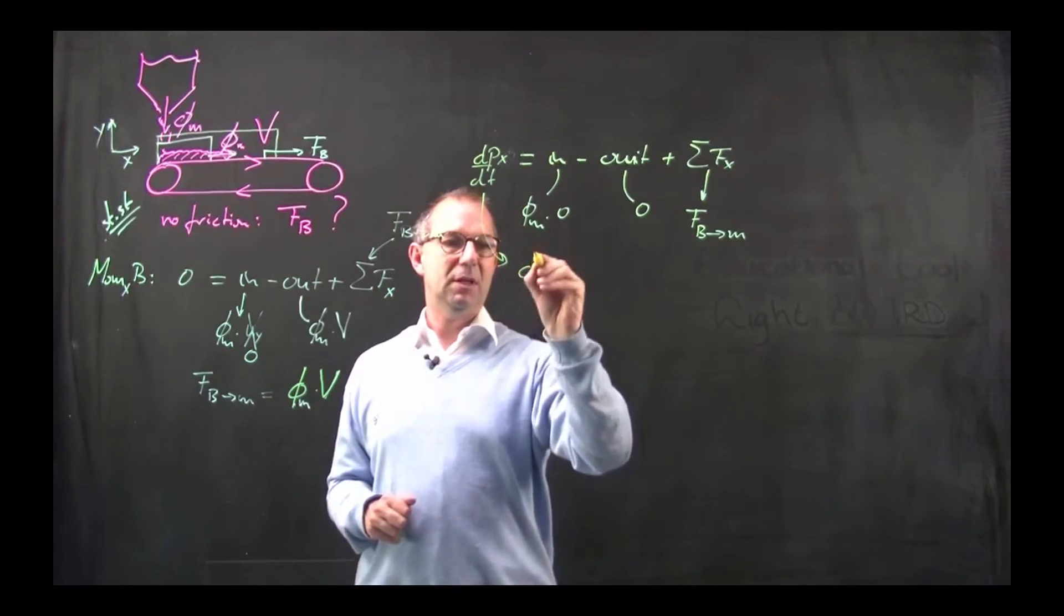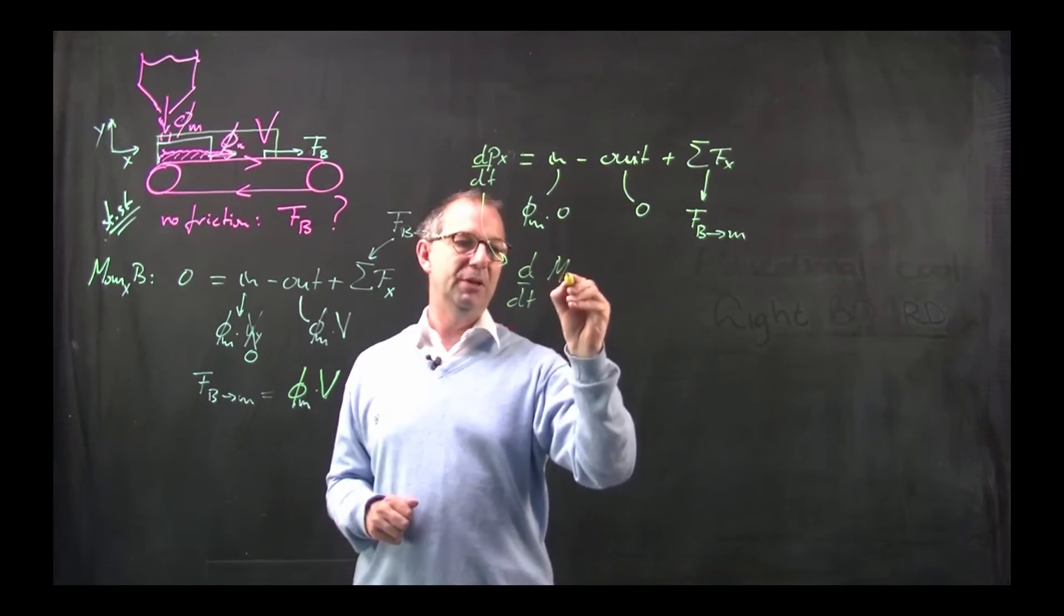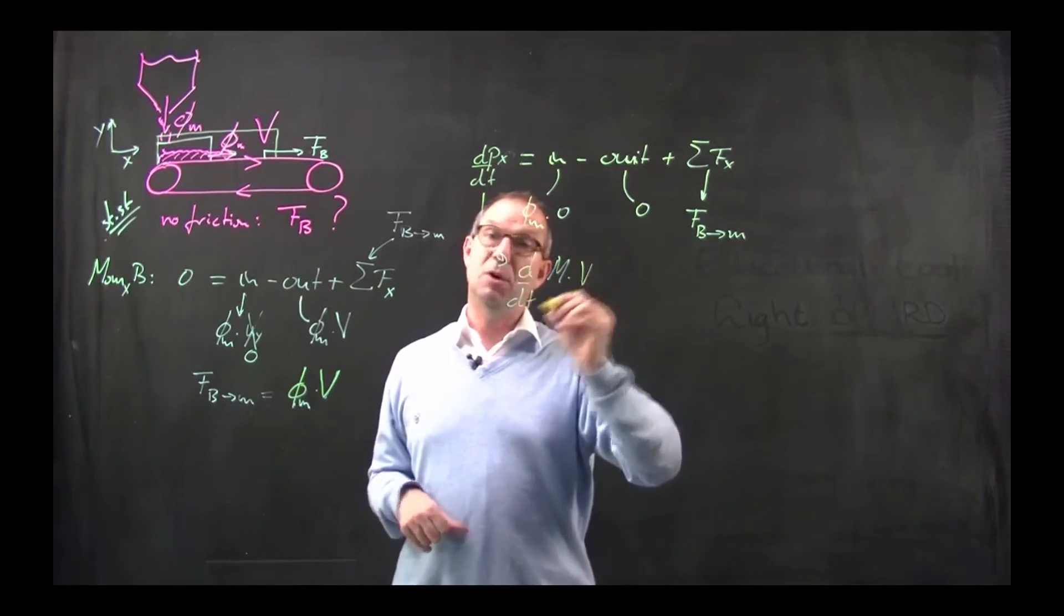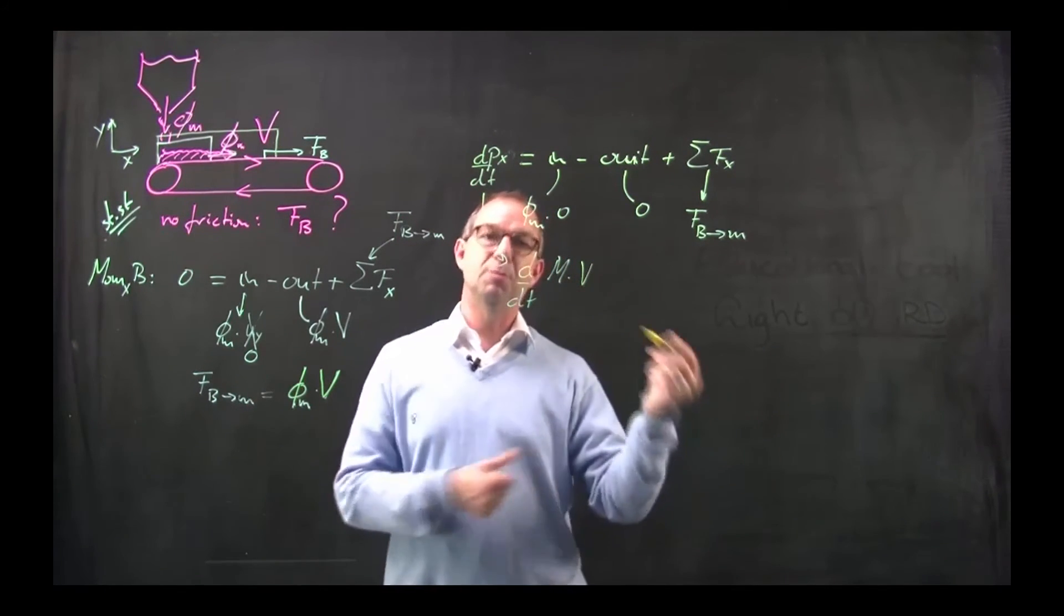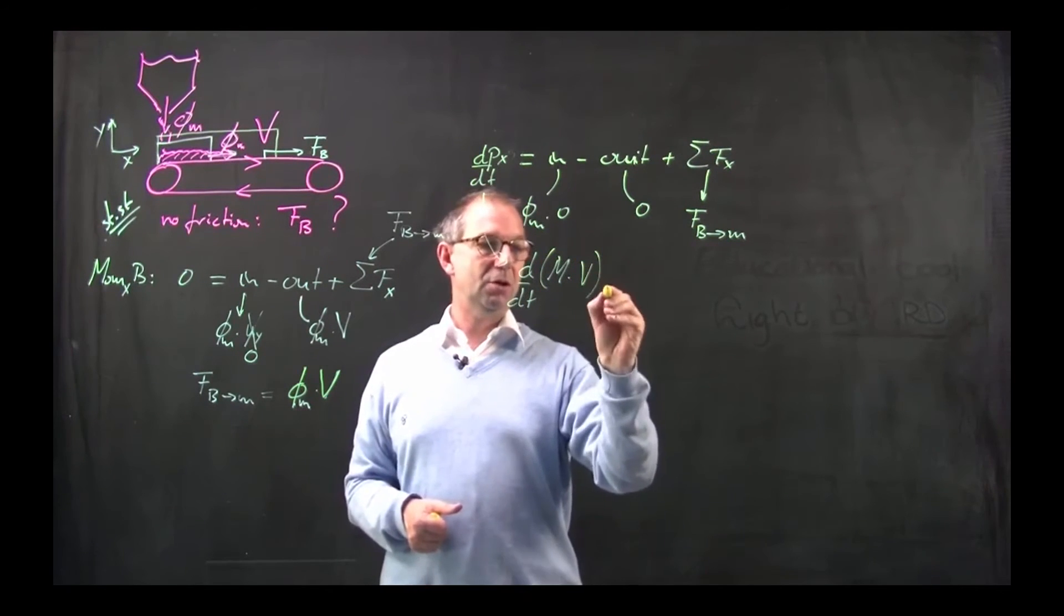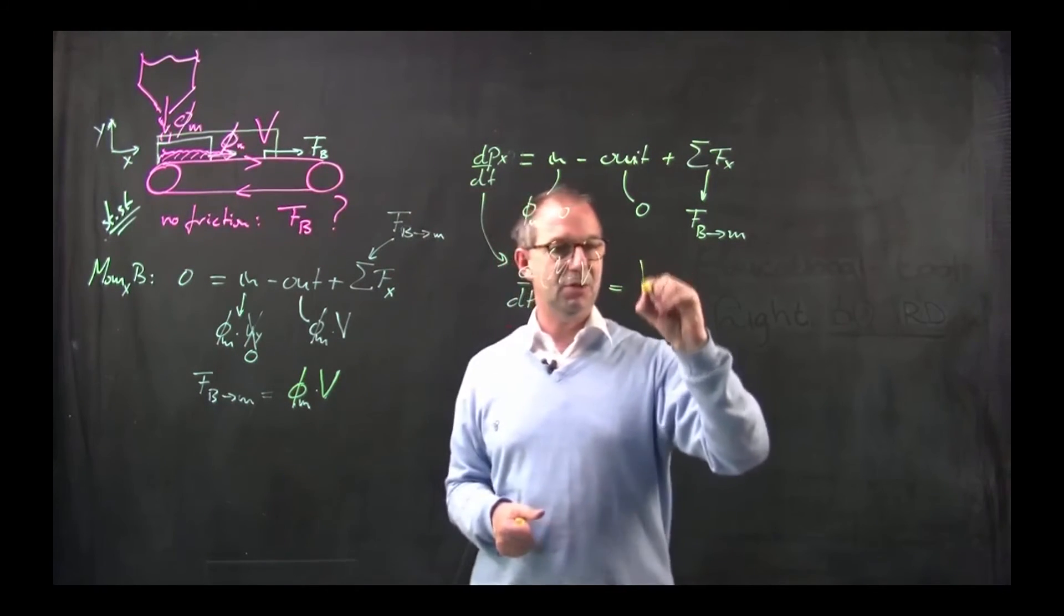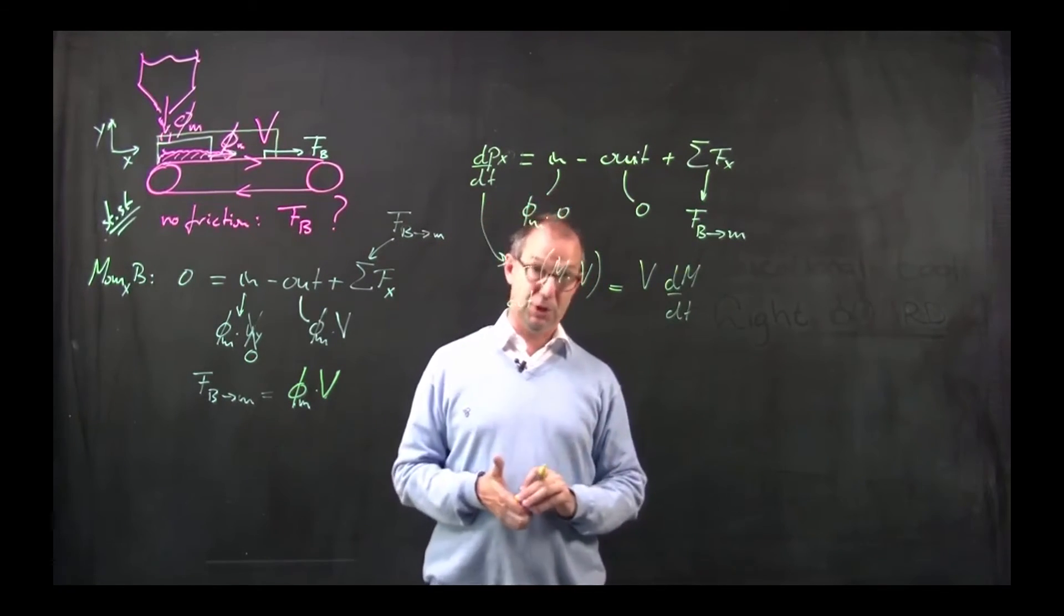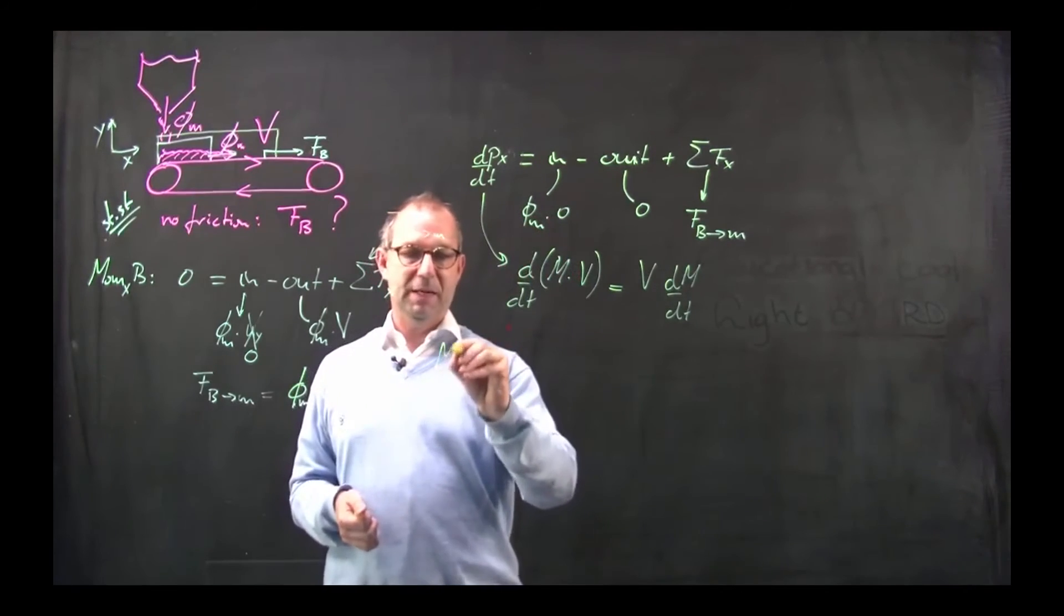And I can write that as the d/dt of the mass at any moment. The mass of sand that has velocity V. Because all the sand, once it's on the belt, is moving with this velocity. Right, V is a constant. So that can be taken out. It's V dm/dt. But the dm/dt for sure is not a constant for this control volume. Take a mass balance.